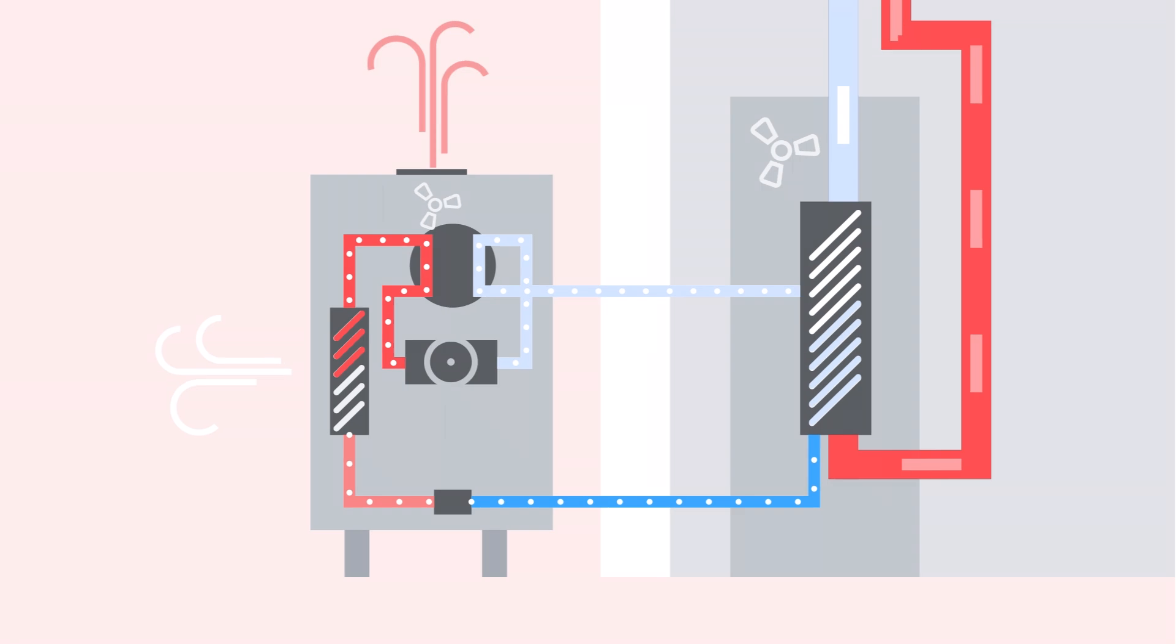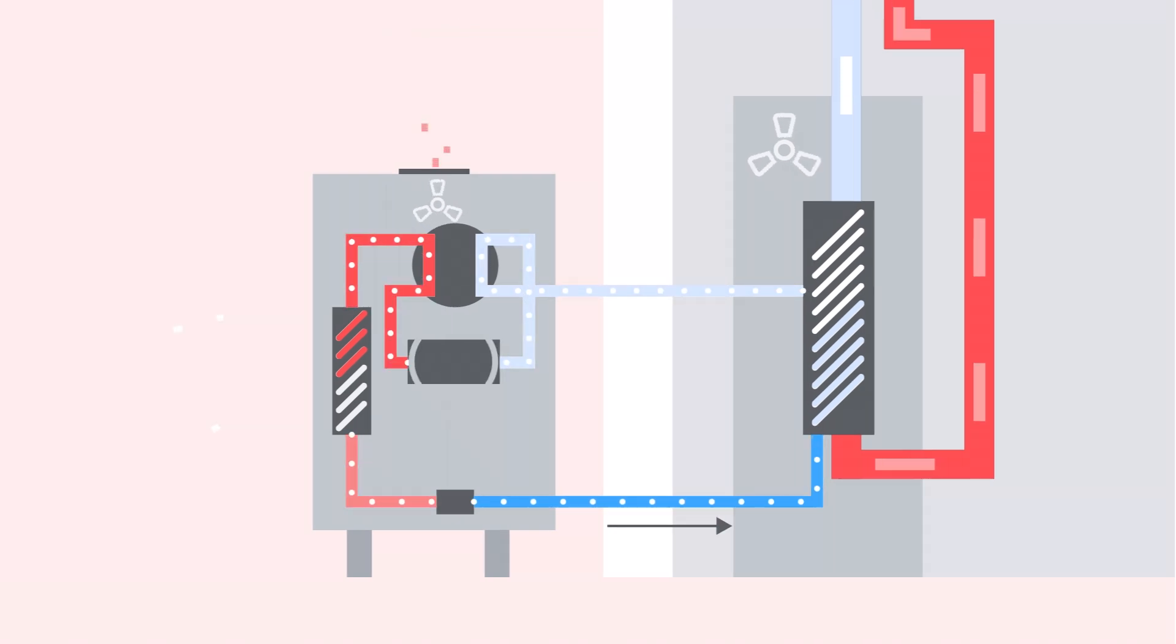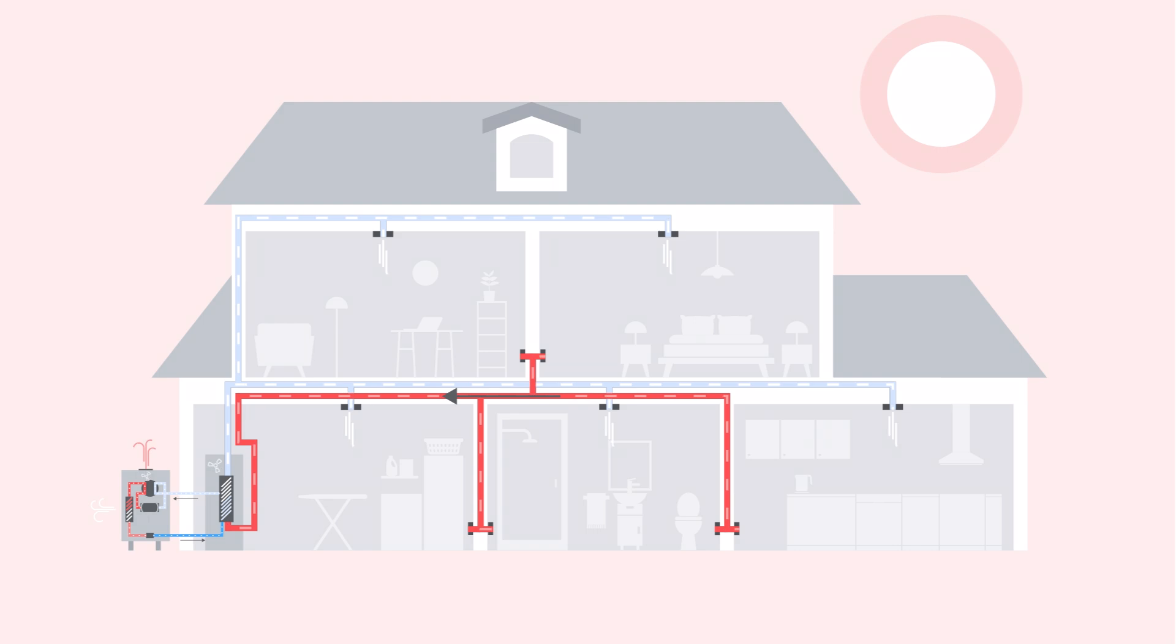The compressor circulates refrigerant to the indoor evaporator coil and the refrigerant absorbs heat as it passes over the indoor air. The resulting cool and dehumidified air then gets blown back into the home.